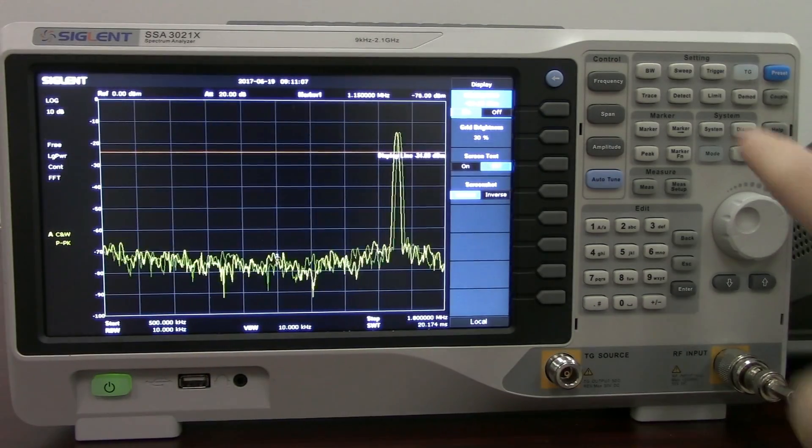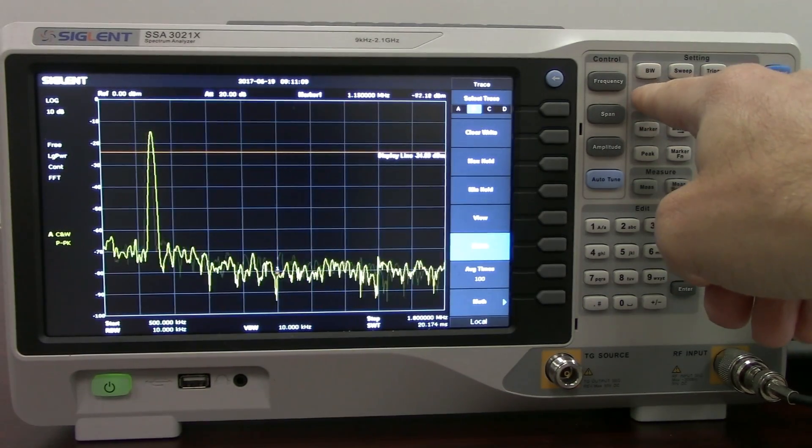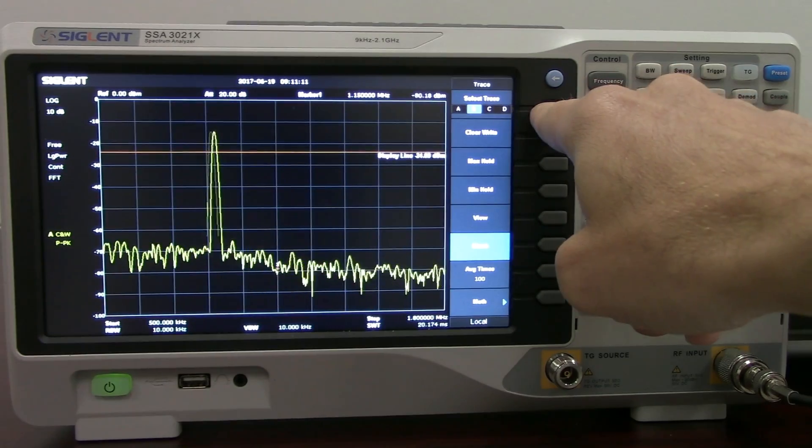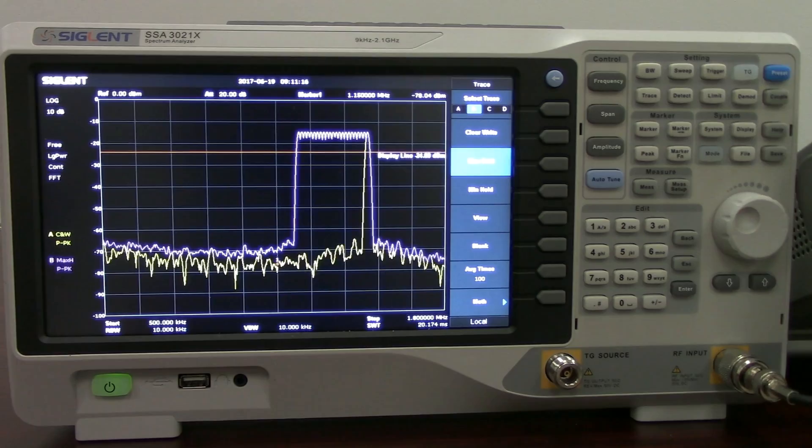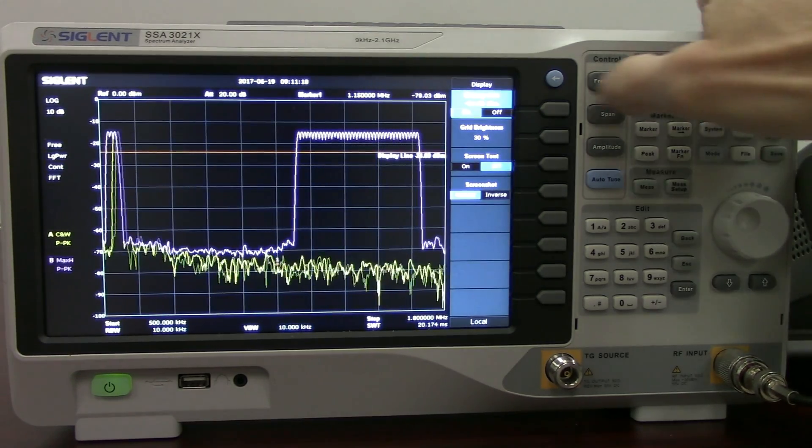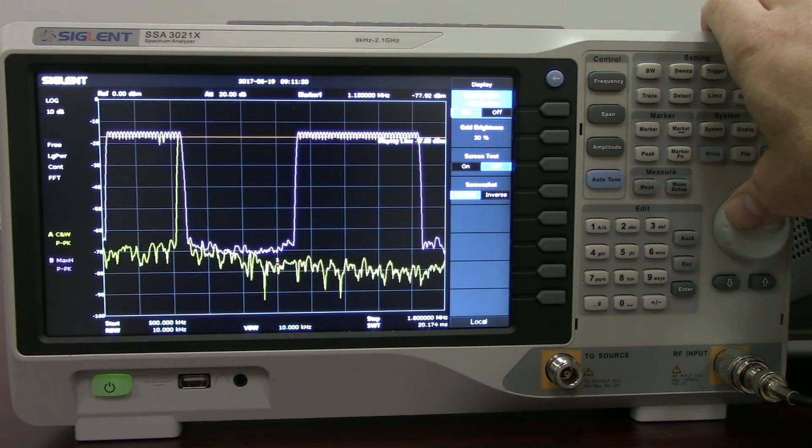And now we're going to enable the spectrum analyzer to trace out. That yellow trace is a clear write. That means it's overwritten at every sweep.